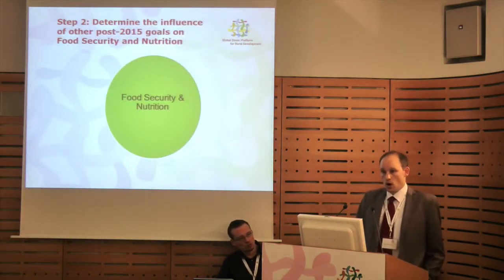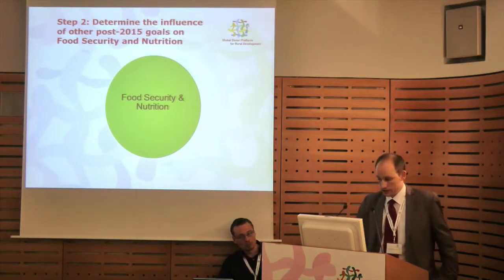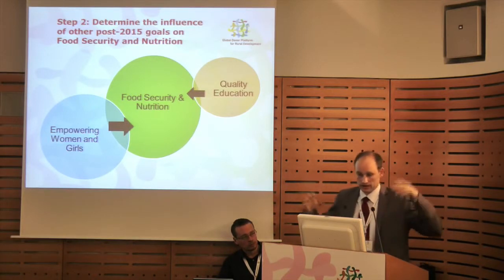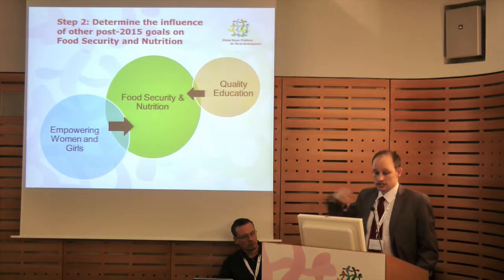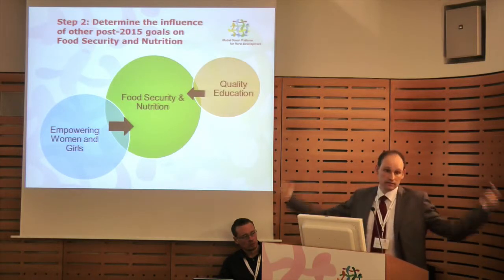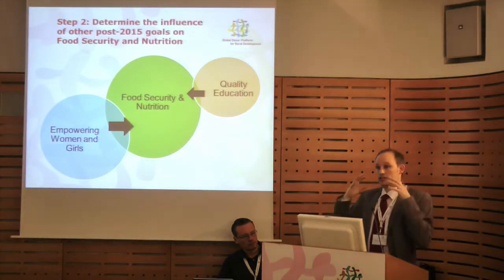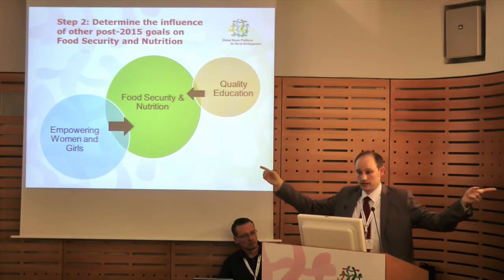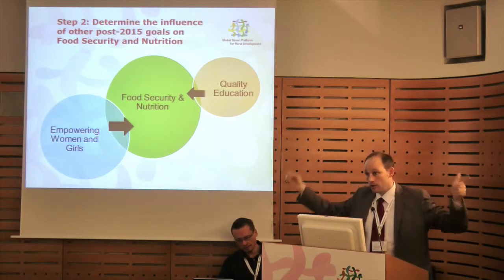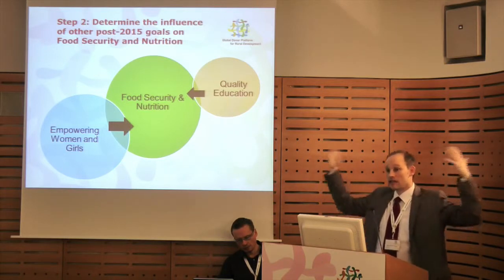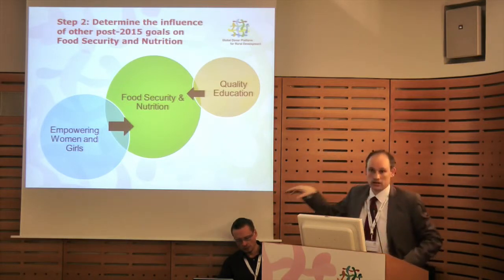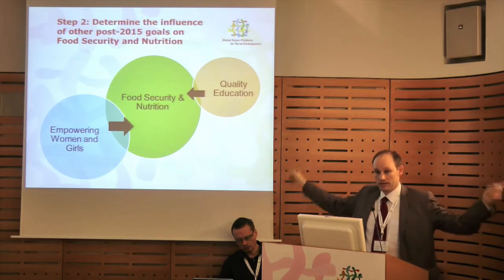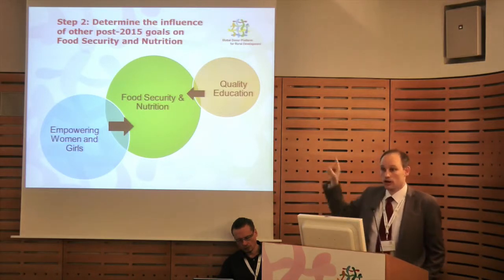Step two is sort of the inverse — it's what are the other goals that influence food security and nutrition? In our exercise, we found that education and the empowerment of women had significant influence on food security and nutrition. So we can't be achieving our food security and nutrition goals without consideration of these other objectives. Those other objectives are being developed by other people in our institutions — our education colleagues or gender colleagues — and we have to communicate with them that to achieve a food security goal, we need their help.